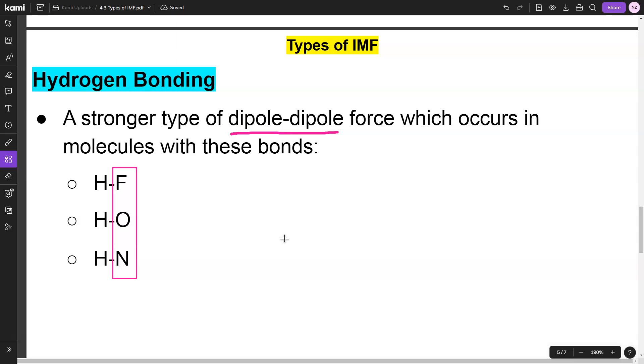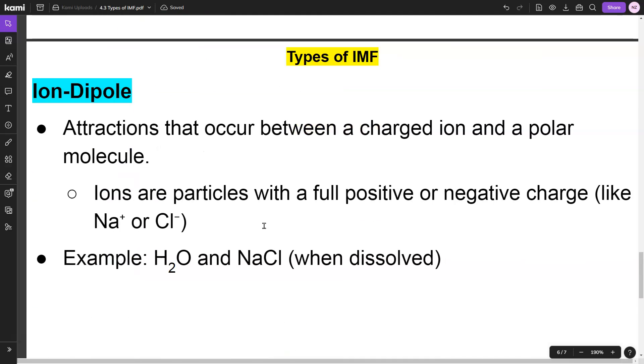This is a stronger type of dipole-dipole force. Dipole-dipole is already stronger than London dispersion, but if you have hydrogen bonding, that's even stronger because it has one of these three types of bonds.